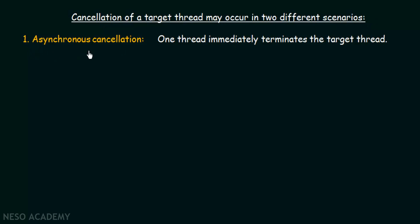The first scenario is asynchronous cancellation, where one thread immediately terminates the target thread. This is very direct — another thread immediately cancels the target thread. The target thread is like a victim which has no power; when some other thread cancels it, it has no choice but to be cancelled.